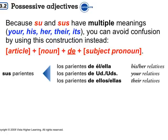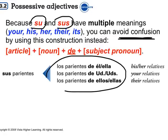Please remember that su and sus have a lot of different meanings. Su and sus could mean your, his, her, their, its. So, to avoid confusion, before you use su or sus, you have to clarify. And you clarify by using 'de' — article, noun, de, and the subject pronoun. For example, 'los parientes de él' will be 'sus parientes' — that means his relatives. 'Los parientes de ustedes' means your relatives. Once you identify who they belong to, you can use the possessive adjective su or sus.